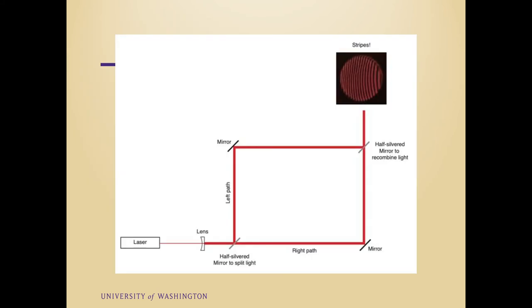Keeping the laser, let's use a lens to spread the beam out and then a half-silvered mirror to give the particles a one-way-or-the-other choice. We then use a couple of good mirrors and another half-silvered mirror to recombine the beams before they reach a wall or screen.